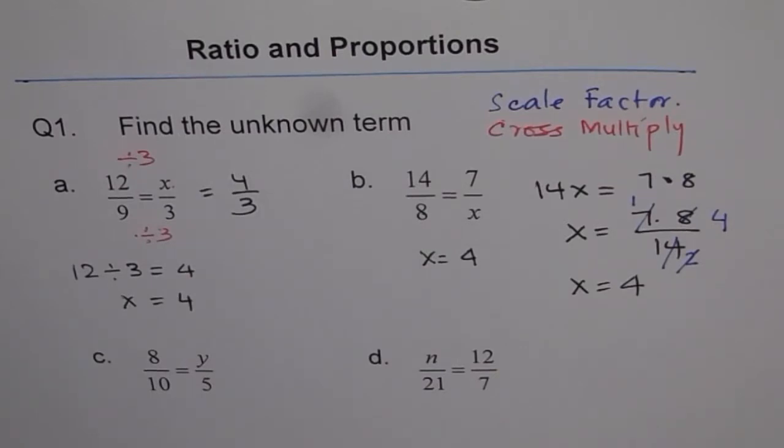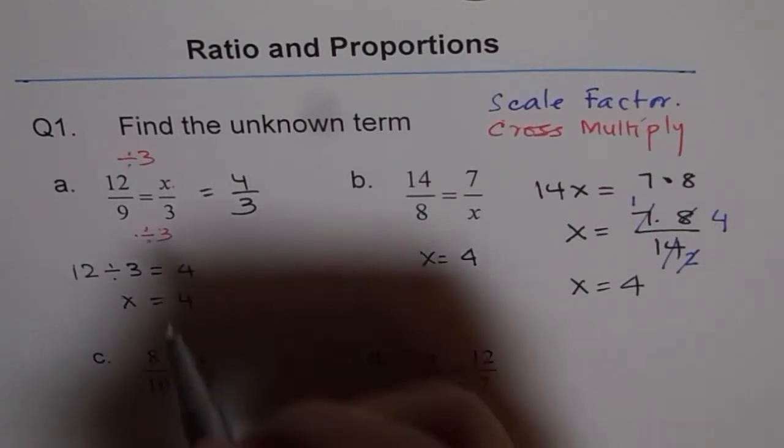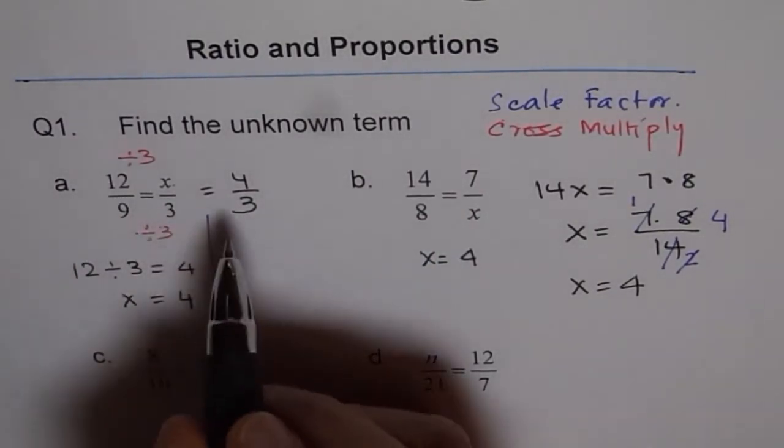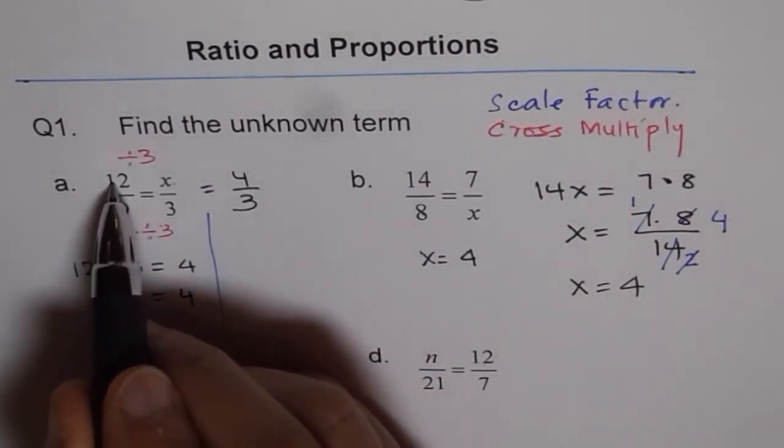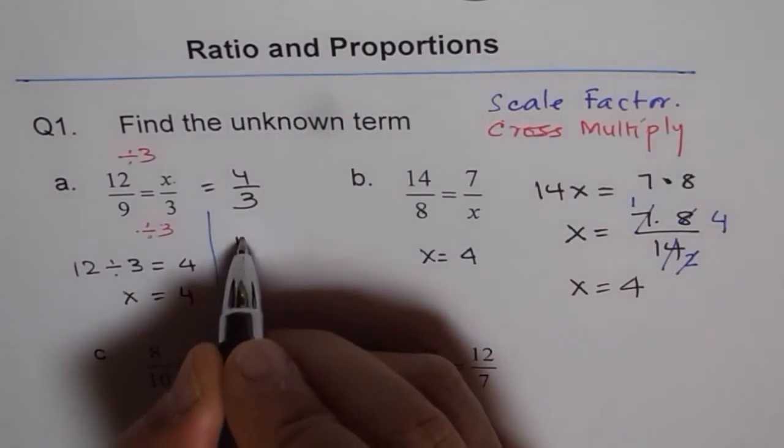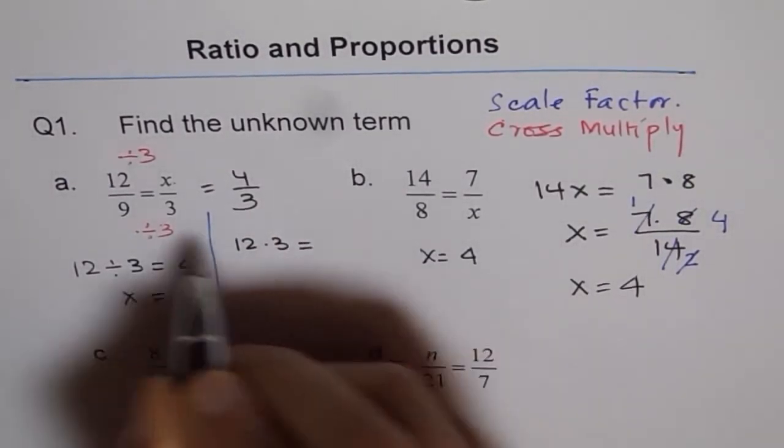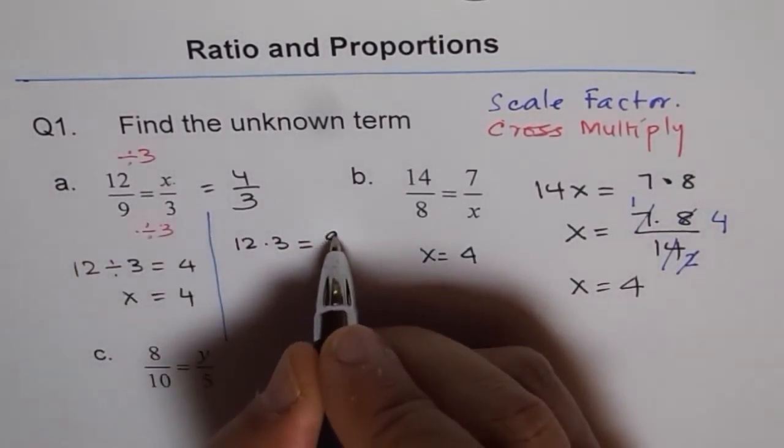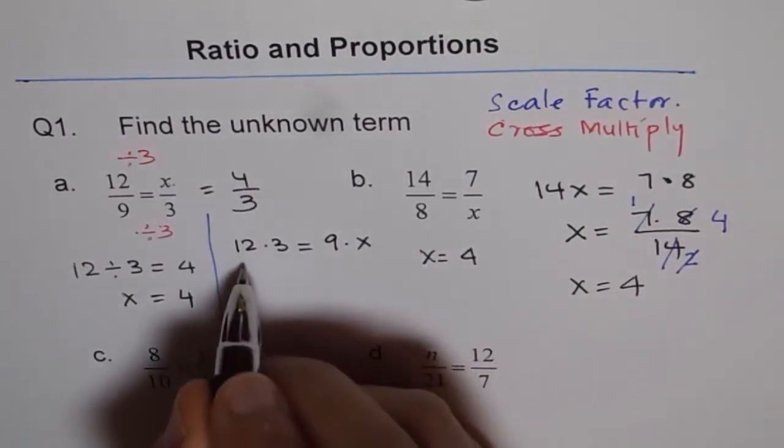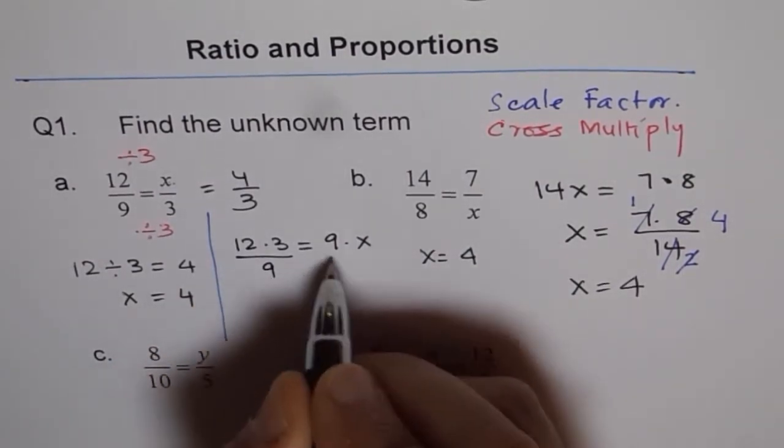Now I'll show you cross multiply with problem a also. We cross multiply: 3 × 12 = 9 × x, so 12 × 3 = 9x. To get x, we divide both sides by 9.